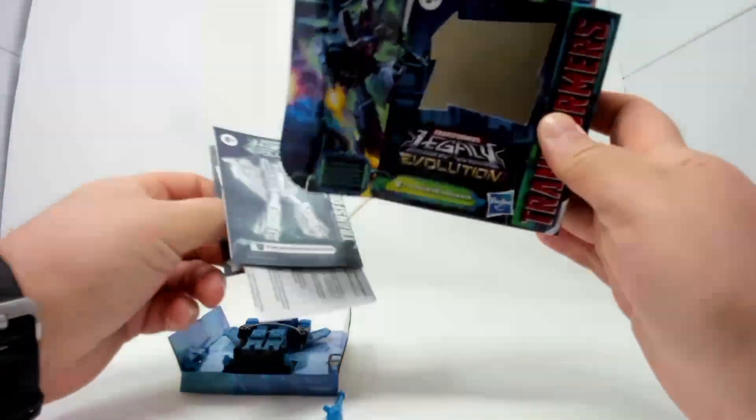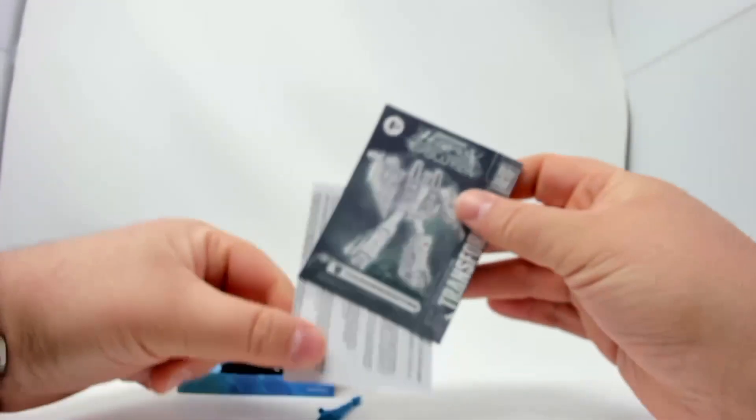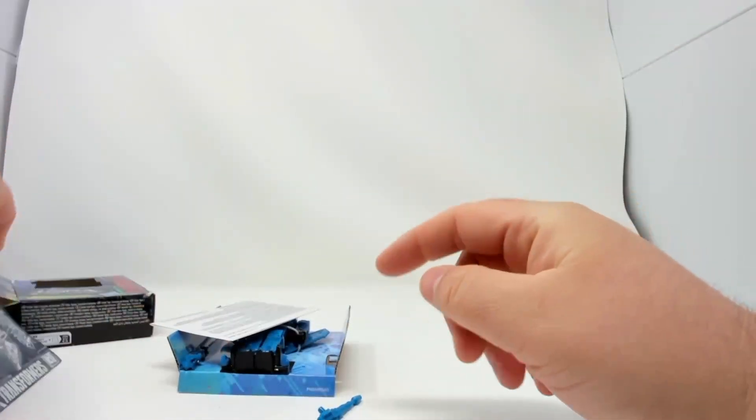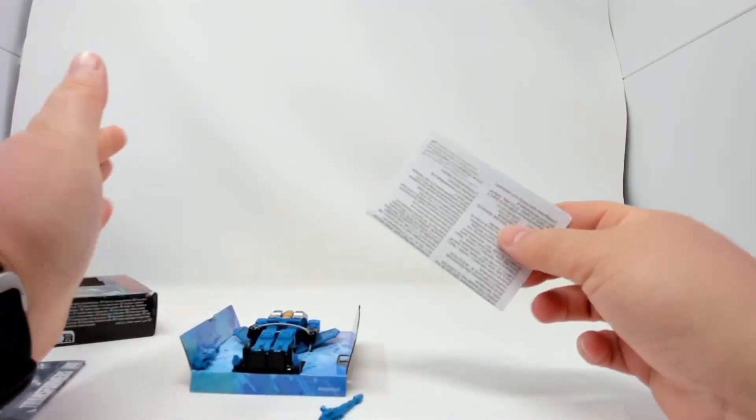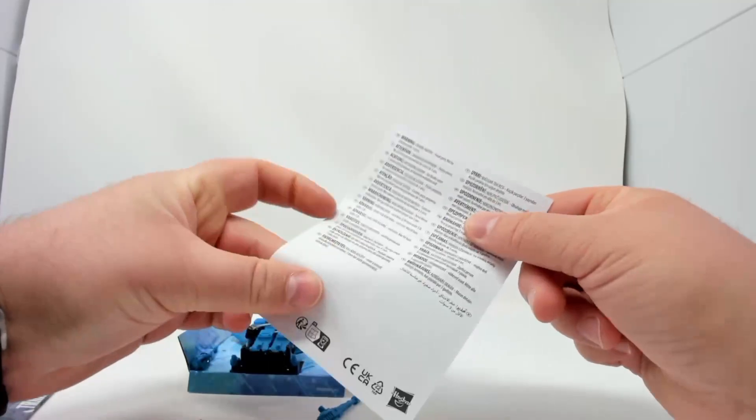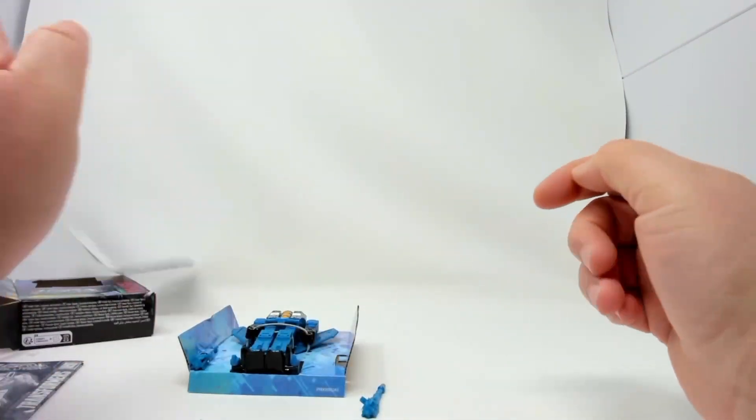The boxes are now empty. Aside from what else is in here, we have the instructions. We may or may not need that. Actually we don't need that, this guy's going to transform exactly the same as Starscream and Skywarp before him.